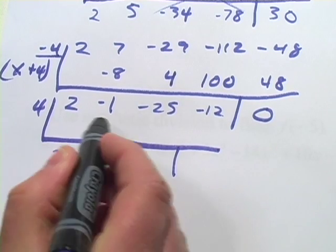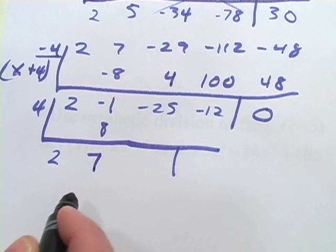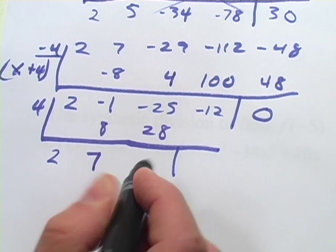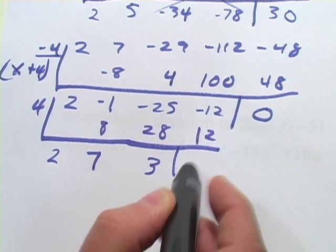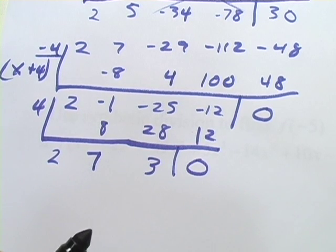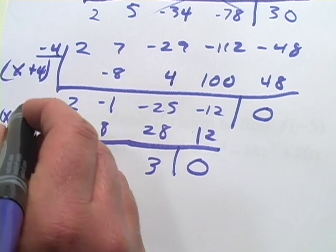So 2 times 4 is 8. That's 7. That's 28. And that's going to be 3 times 4 is positive 12. That did work out. Wonderful. We kind of got lucky there. So x minus 4 is also a factor.